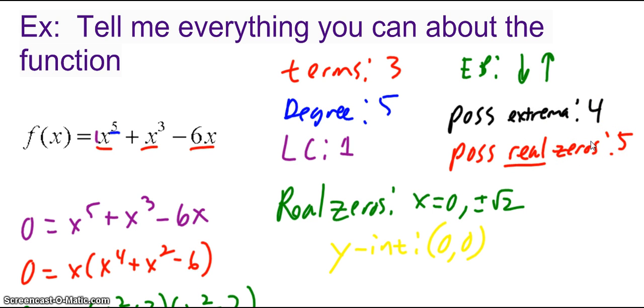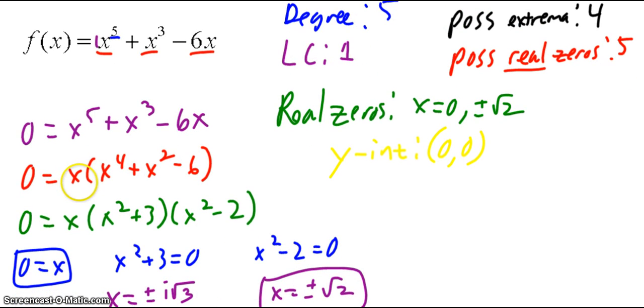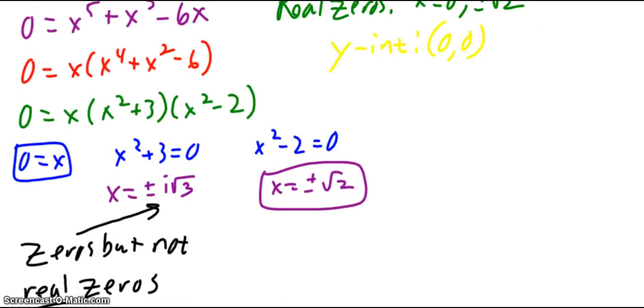What are the actual real zeros? So to find that, we set this equal to 0. I factored out an x, and then x to the fourth plus x squared minus 6. That factors into x squared plus 3 times x squared minus 2. So that's a technique that we just used in our previous section. Now I set each factor equal to 0. I get x equals 0. That's a real zero.